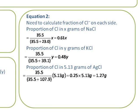So now I can build my second equation. I can say that the proportion of chloride in sodium chloride times its mass, plus the proportion of chloride in potassium chloride times its mass, is equal to the proportion of chloride in silver chloride times its mass. In other words, 0.61X plus 0.48Y equals 1.27.